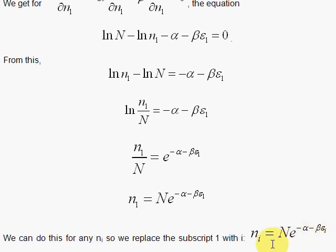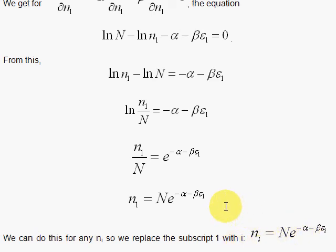What has to be done next is we have to determine what alpha and beta are. This gives us the total number of particles in each energy level, and next we will identify the physical meaning of these undetermined multipliers.